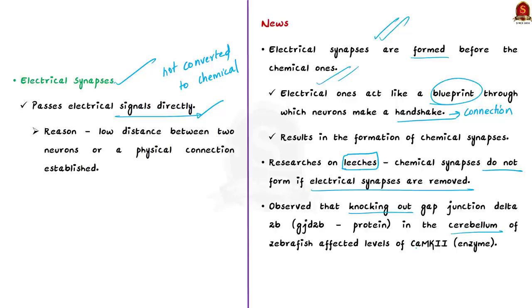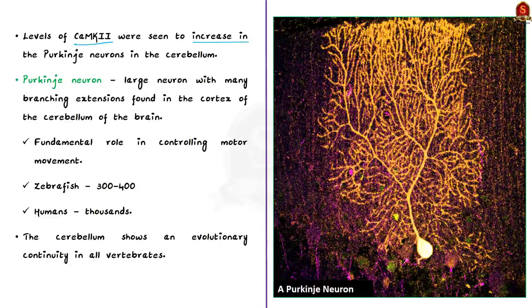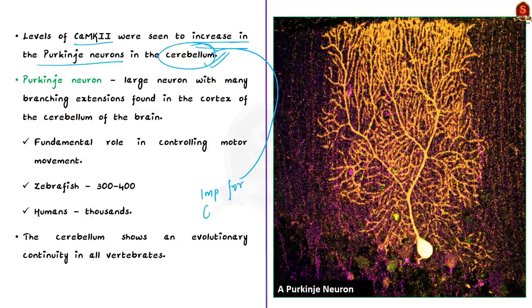The research group also observed that knocking out a particular protein in the cerebellum of zebrafish affected the levels of a particular enzyme. The protein removed was gap junction delta-2b protein, and the enzyme affected was CAMK2 — calcium or calmodulin dependent protein kinase 2. This enzyme is important because its levels were seen to increase in the Purkinje neurons in the cerebellum. The cerebellum is the little brain, a structure at the back of our brain important for making postural adjustments to maintain balance. Purkinje neurons are large neurons with many branching extensions found in the cortex of the cerebellum, and they play a fundamental role in controlling motor movement.